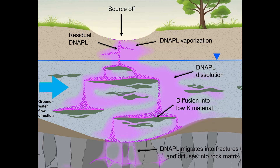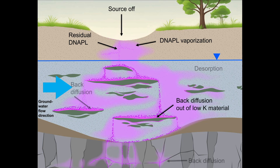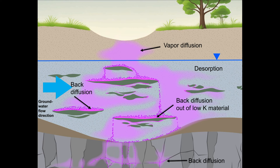With time, residual D-NAPL vaporizes and dissolves. Eventually, the vaporized and dissolved concentrations decline, and D-NAPL diffuses back out of the low hydraulic conductivity materials and desorbs from solids.